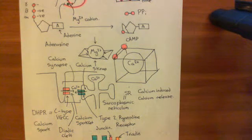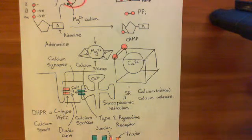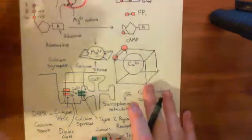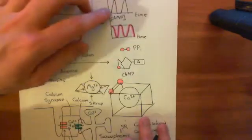It's this calcium that will then cause the contraction of the cardiac muscle cell. That's how we get the upstroke of this calcium spike.